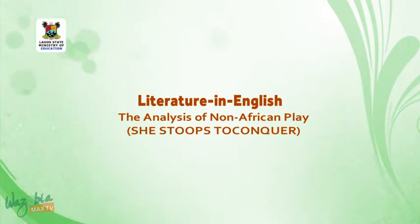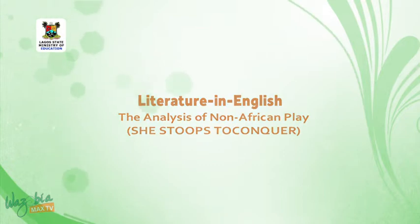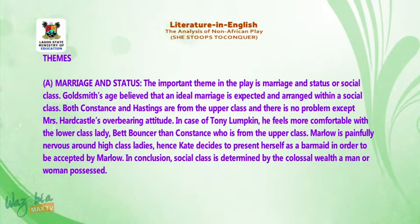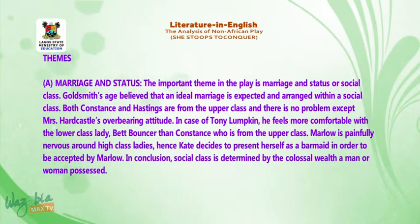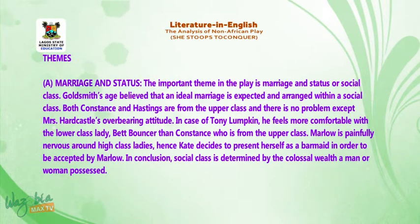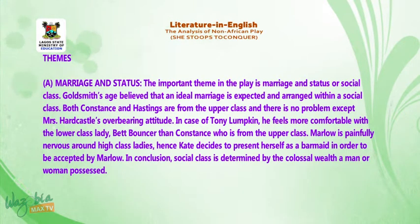Welcome to the second segment of today's lesson, which is the thematic preoccupation of the play. Theme A: Marriage and Status. The important theme in the play is marriage and status, or social class. Goldsmith's age believed that an ideal marriage is expected and arranged within a social class. Both Constance and Hastings are from the upper class.